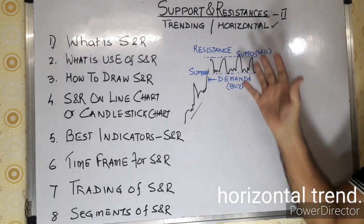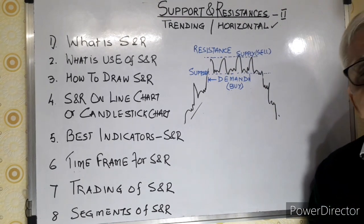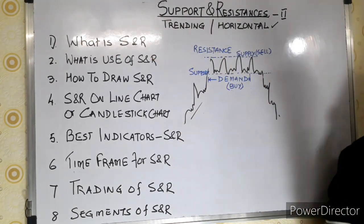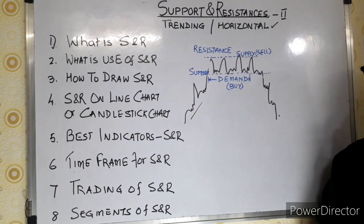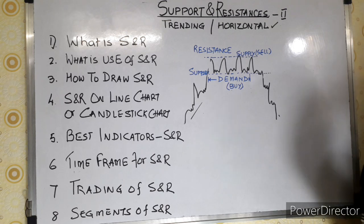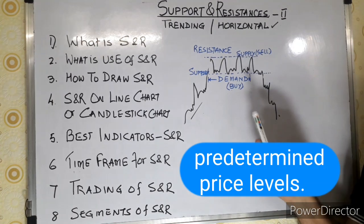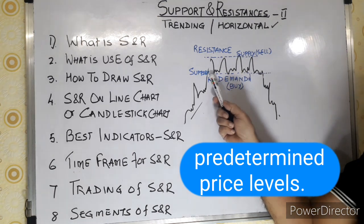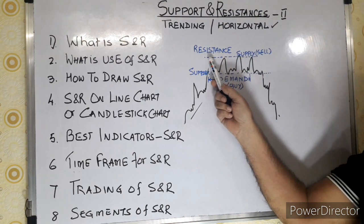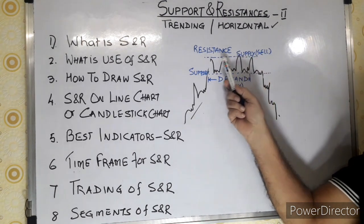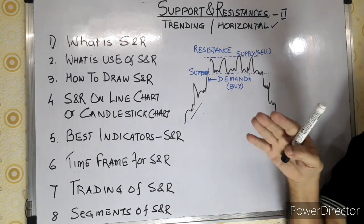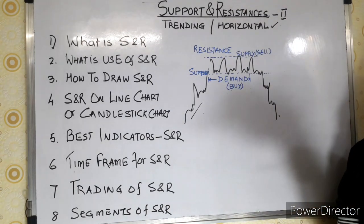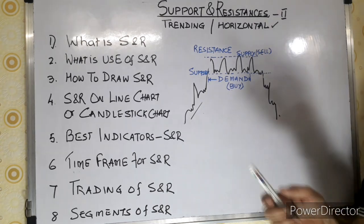As far as support and resistance are concerned, let us first see what is a support and what is a resistance. Support and resistance is actually a predetermined level where prices either pause or take a trend reversal.